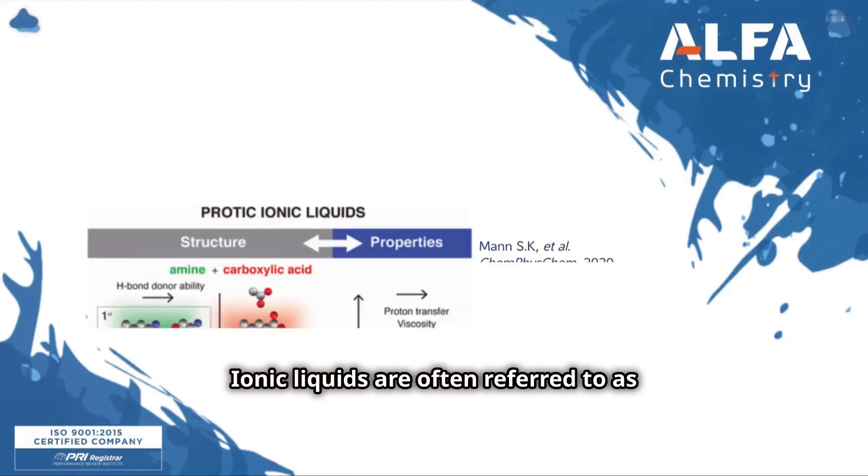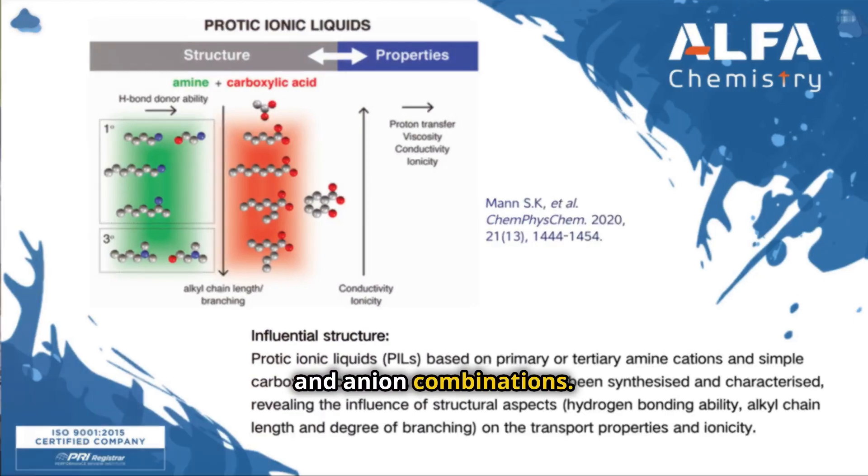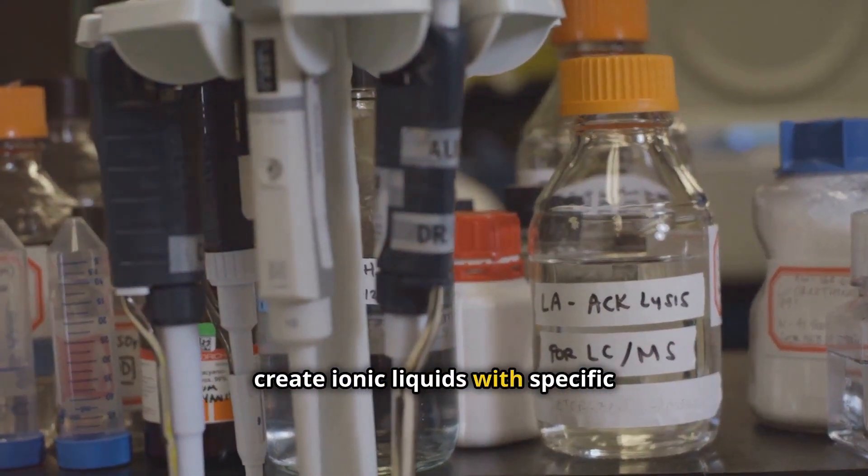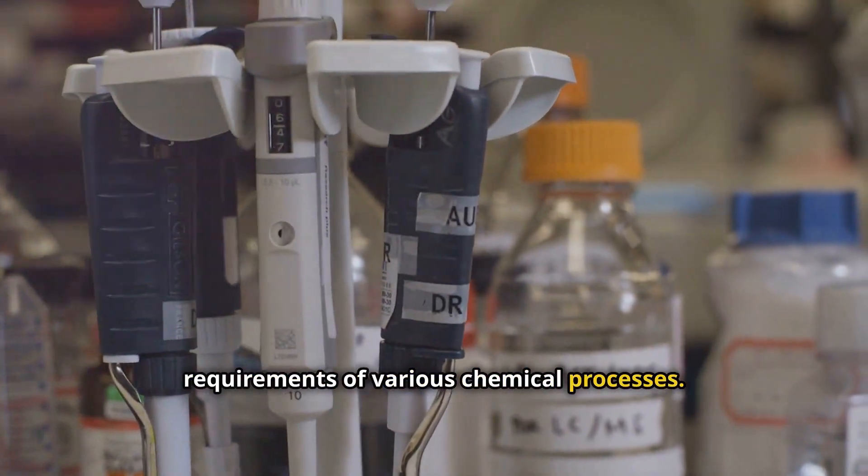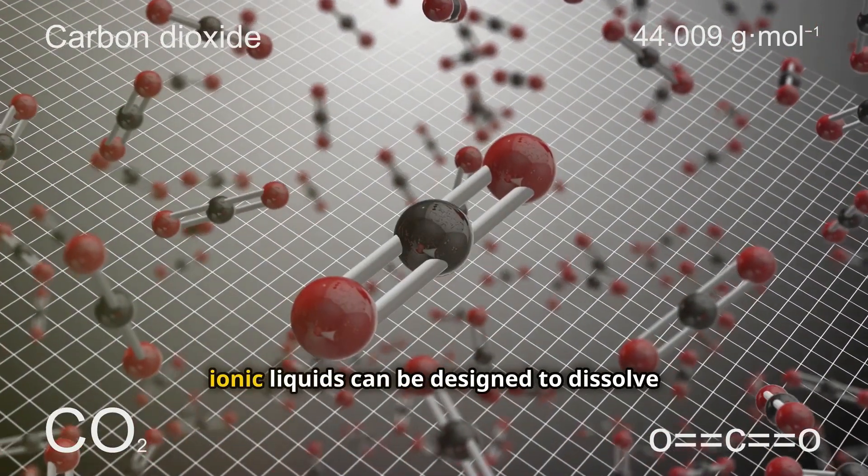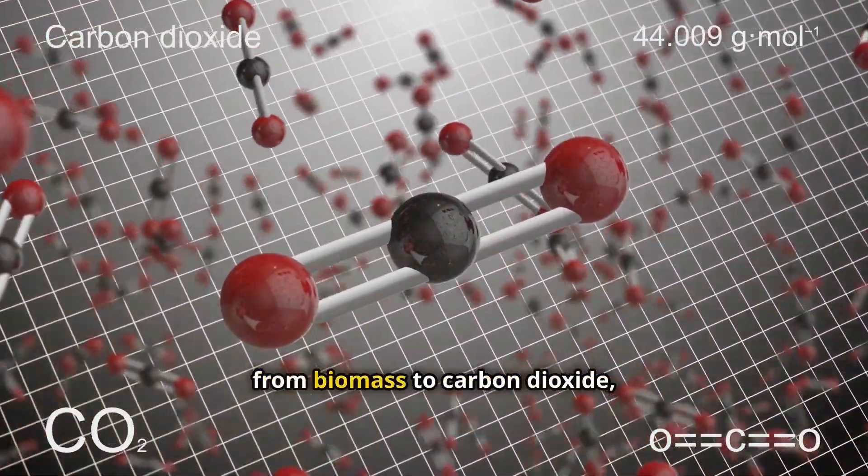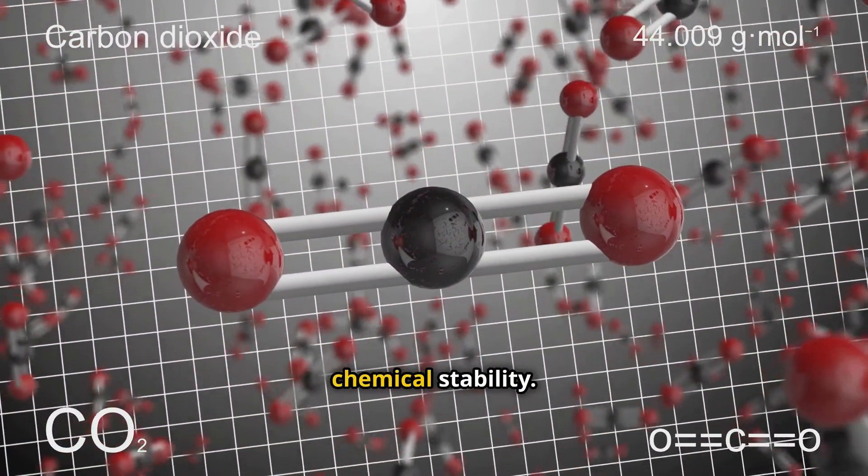Ionic liquids are often referred to as designer solvents because their properties can be fine-tuned by altering the cation and anion combinations. This tunability allows scientists to create ionic liquids with specific properties tailored to meet the requirements of various chemical processes. For example, ionic liquids can be designed to dissolve a wide range of materials, from biomass to carbon dioxide, while also exhibiting high thermal and chemical stability.